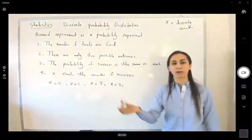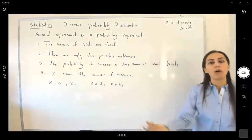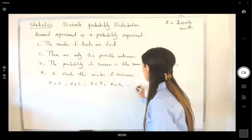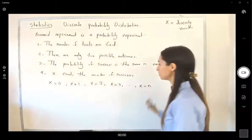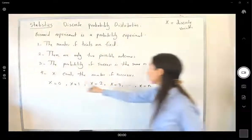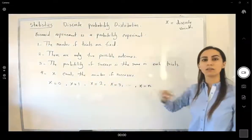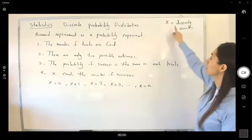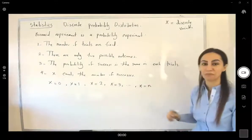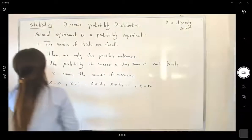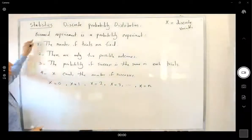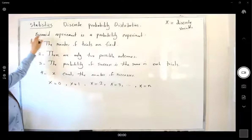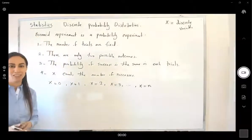X can also be four, five, or all of them successful. So x takes on values from zero to n — all of the possibilities for x. That's why when we have a discrete random variable and that experiment satisfies these conditions, we call it a binomial experiment.